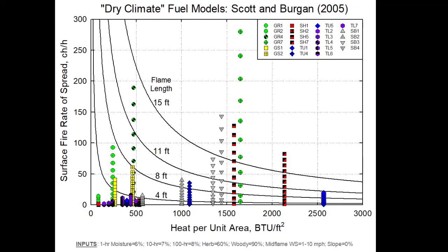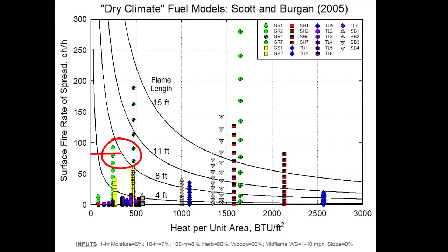Remember that each point of these fuel models represents the fire behavior at wind speeds of 1 through 10, where you have those 10 dots along a vertical line. If we're seeing a rate of spread of 80 chains per hour and flame lengths of 8 feet, and we know that our winds were 5 to 8 miles per hour, then you can see that we have two fuel models that look like they might be possible choices for our area.